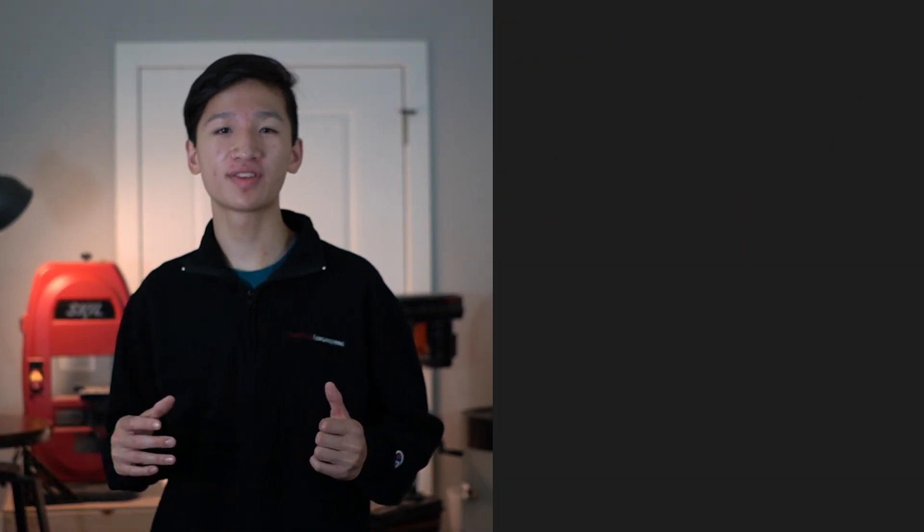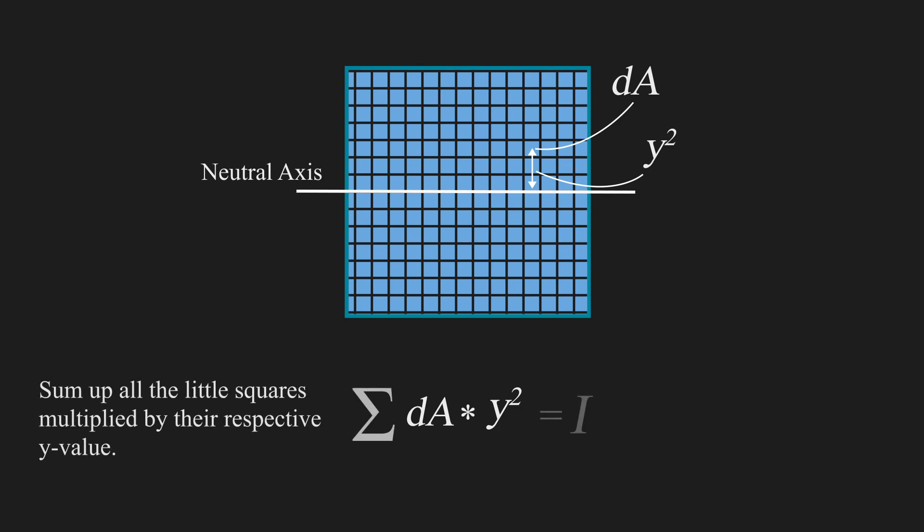We can calculate the second moment of inertia of an object by looking at its cross-section. Here we can divide the area up into a bunch of little areas, let's call one dA. Then we multiply that by y squared, which is the distance from the neutral axis, or the axis it bends about. And if we sum up all of these products, we will get the second moment of inertia.